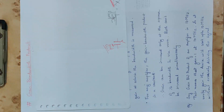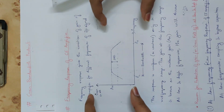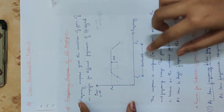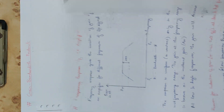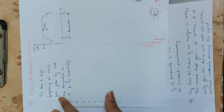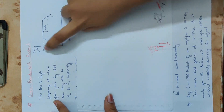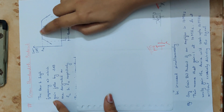The next topic is Gain Bandwidth Product. Gain is output divided by input. The frequency response curve is a graph showing the relationship between Gain and Bandwidth. We are going to make a figure showing Gain variation with respect to frequency.